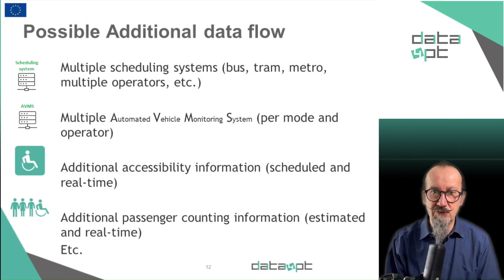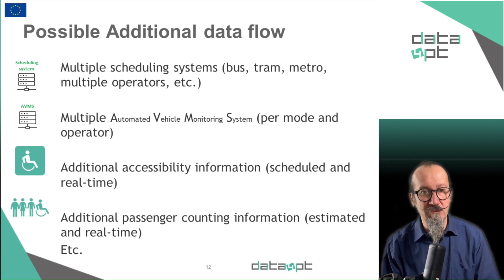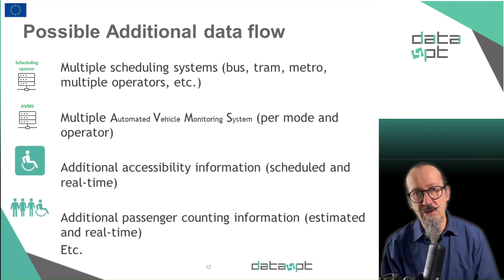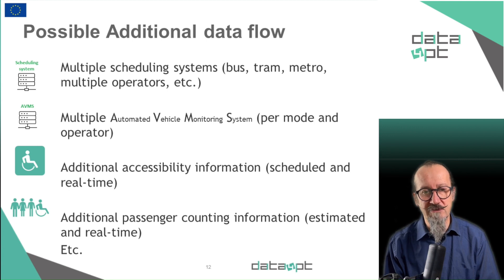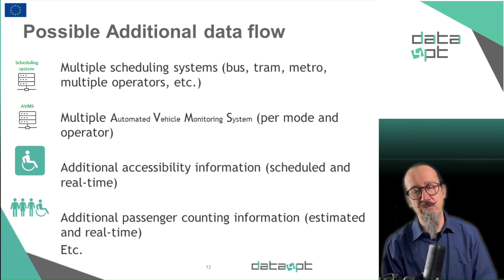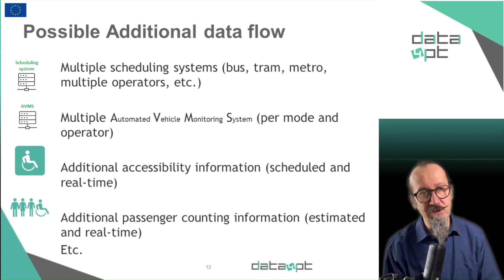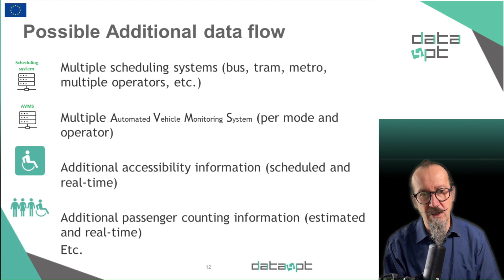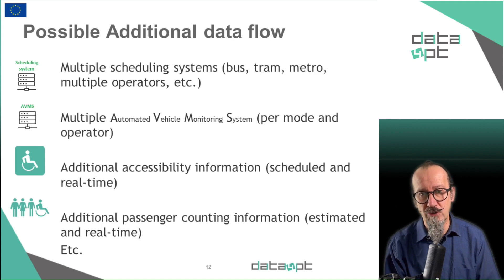Several other data flows can be considered. For example, you may have several scheduling systems — one for bus, one for metro, one for train — and NetX will help to harmonize all these data flows across the whole system. It may be the same for AVMS, as it is quite common to have multiple AVMS. Having NetX and Siri will help harmonize and avoid developing or using multiple protocols. Additional information, such as accessibility, which is often collected by different persons or organizations, can be collected to enhance the data previously provided using NetX, and it's very important to use NetX to keep the data format consistent when doing such enhancement.